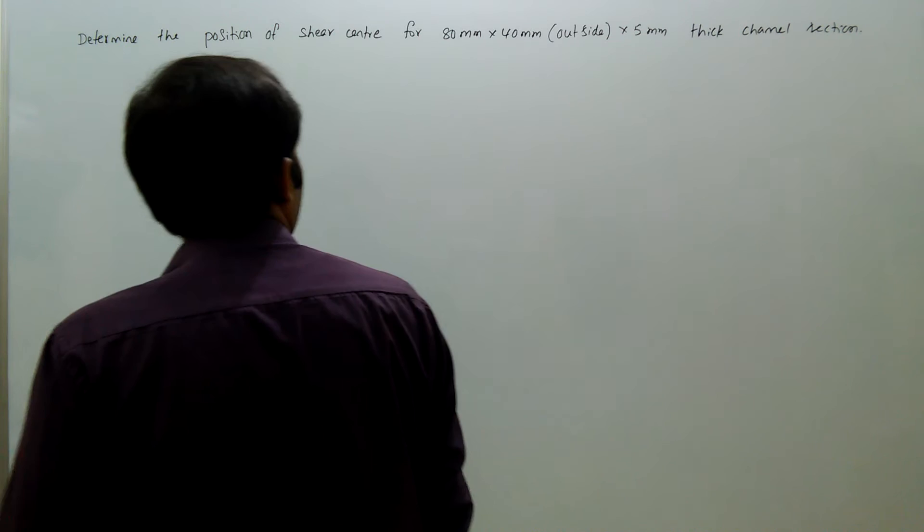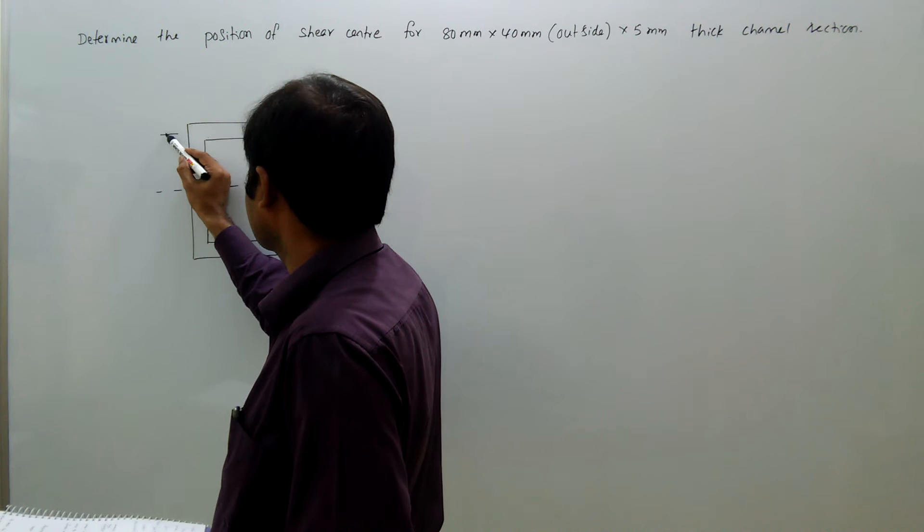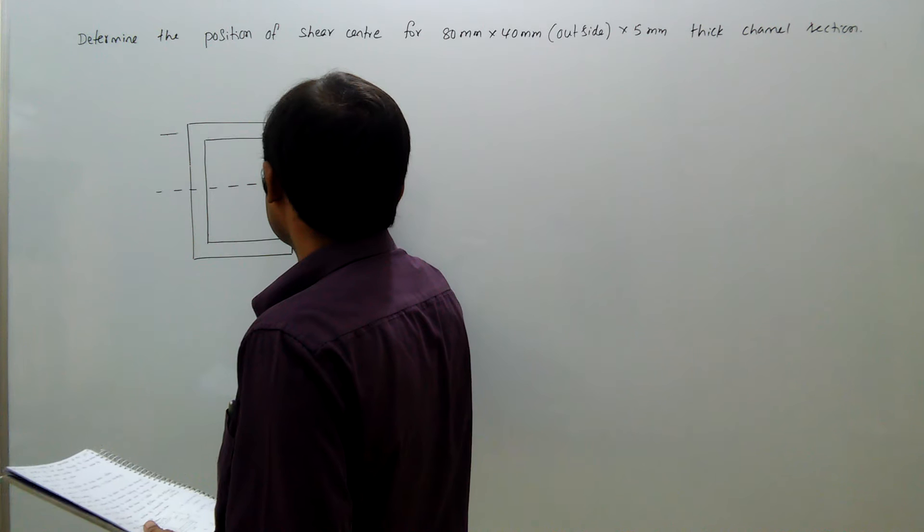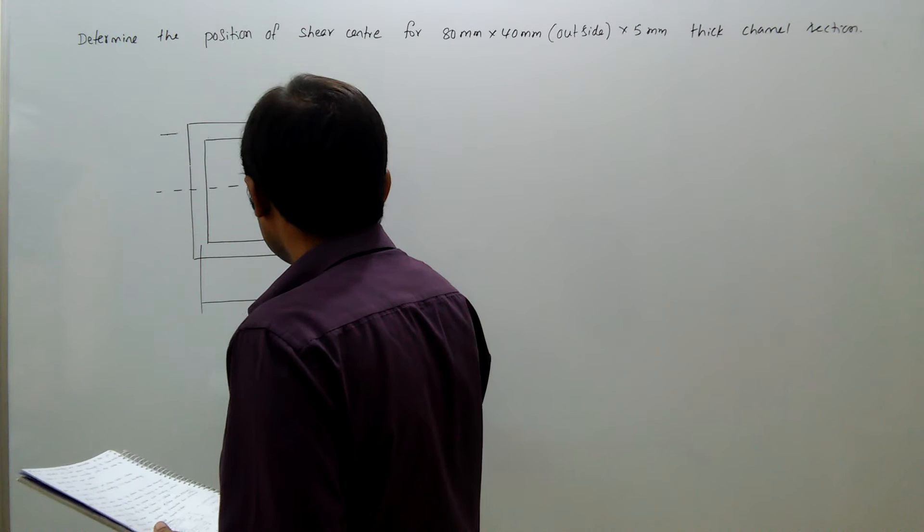The outer dimension is 80mm, so center to center is 75mm. The thickness is 5mm. The center to end width is 37.5mm on both sides.